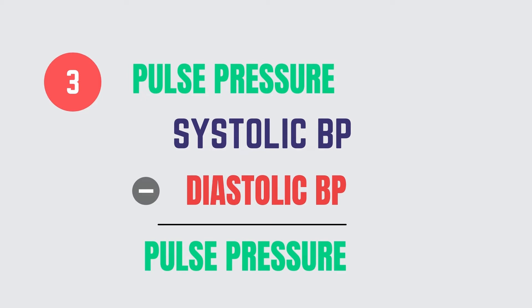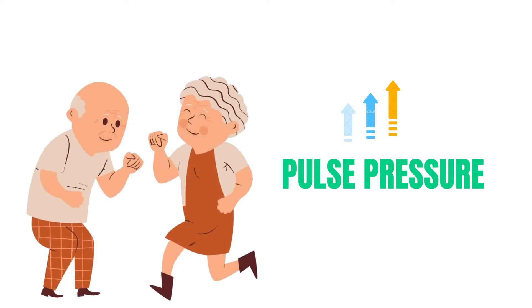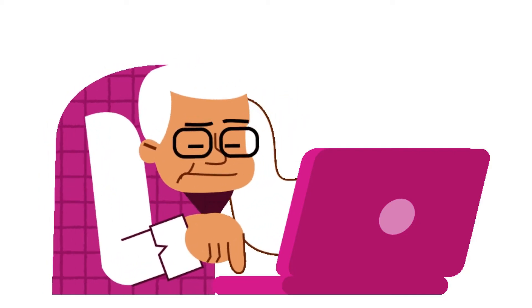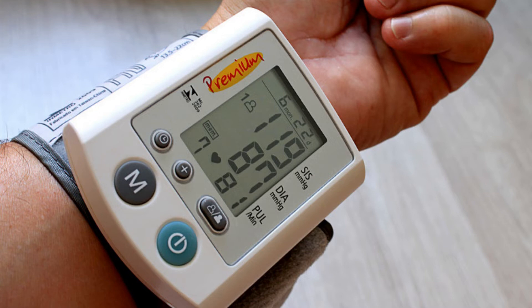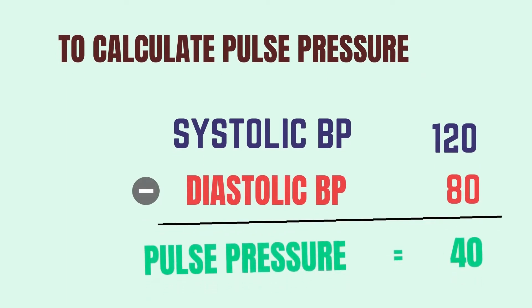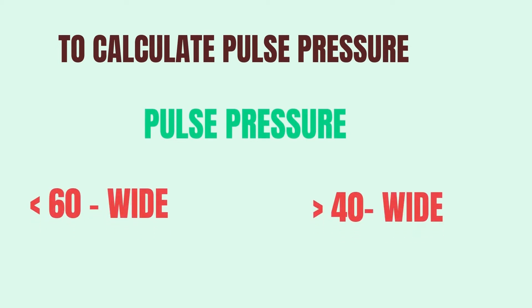Pulse pressure is the difference between your blood pressure's upper and lower levels. As you become older, your pulse pressure tends to rise, and this figure might also be a precursor to health concerns before you notice any symptoms. The systolic and diastolic pressures are the two numbers used to calculate blood pressure. The top number, systolic pressure, measures how much pressure your arteries are under while your heart beats; the bottom number, diastolic pressure, indicates pressure between heartbeats. To calculate your pulse pressure, subtract the bottom number from the top — for example, 120 minus 80 equals 40 mmHg. It could be a wide or narrow pulse pressure.